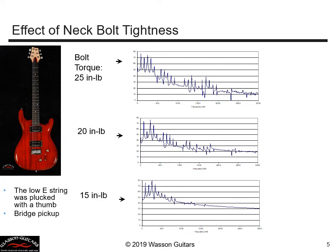If I go from 25 inch-pounds down to 20 — loosening that joint a little — it looks like the middle plot. If I go all the way down to 15 inch-pounds, it looks like the bottom plot. What happened? We're losing information. As we loosen the neck, there is micro-motion in the joint between the neck and the body, and that micro-motion is causing a loss of the higher-frequency modes — they're being damped out.